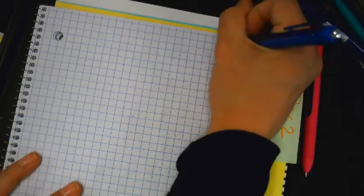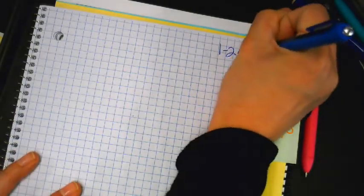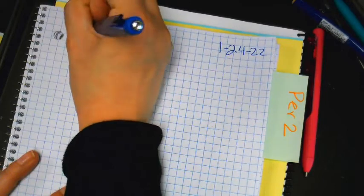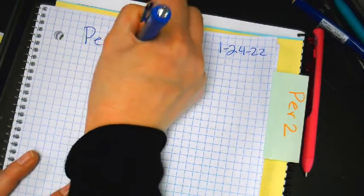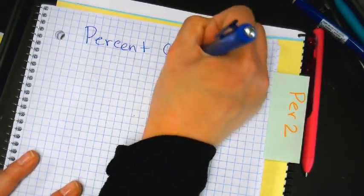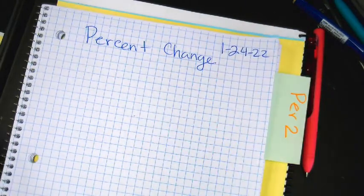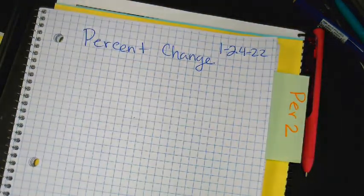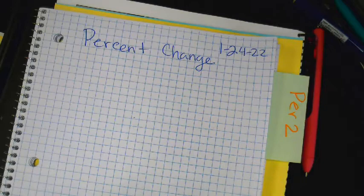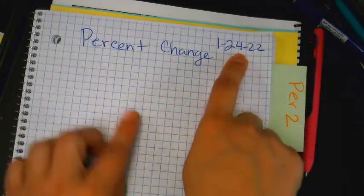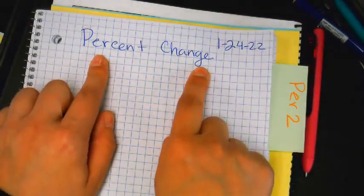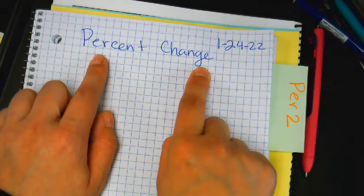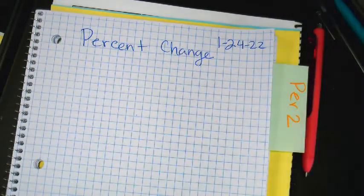So today's date is 1-24-22 and the title is Percent Change. Okay, Percent Change. So we're going to be dealing with percents today. Let's write this down. We want our date and our title always in our notes.